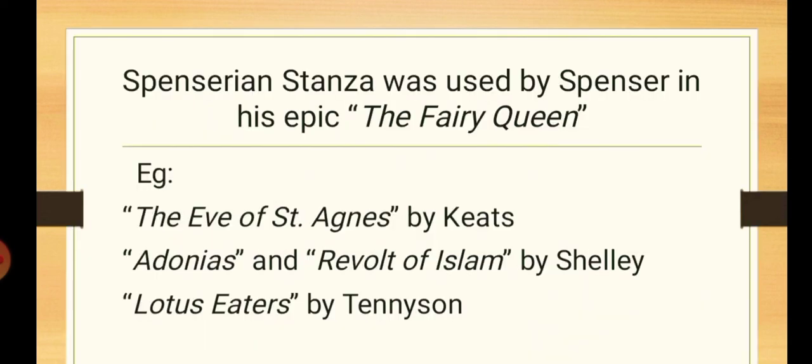As the name suggests, it was used by Spenser in his epic poetry, The Faerie Queene. Many other poets like Keats uses it in his Eve of St. Agnes. Shelley uses the pattern in Adonais and Revolt of Islam, whereas Tennyson uses it in his Lotus Eaters.